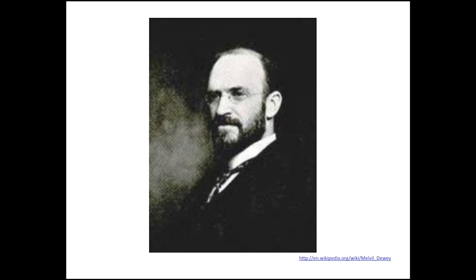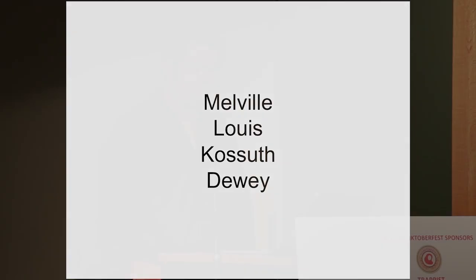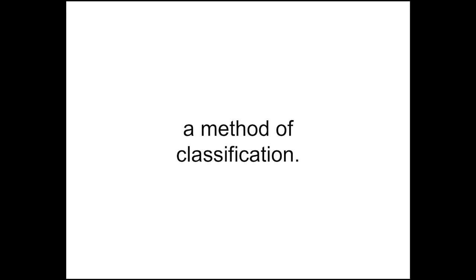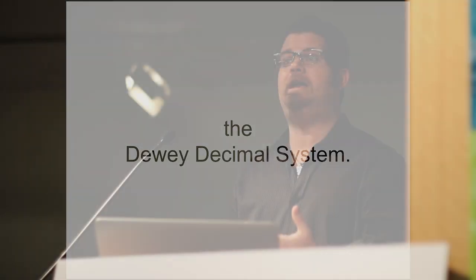Let's start with language abuse. The year was 1873, and a young college student was appointed as the assistant librarian at Amherst College. This man, Melville Lewis Cosseth Dewey, became frustrated with categorization inside the library, and in an attempt to increase the utility of the library without increasing expenditure, he created a method of classification — the Dewey Decimal System.